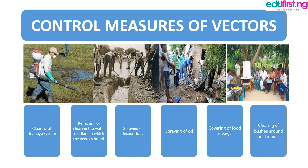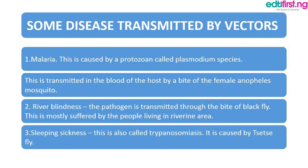Additional control measures include always covering our food. We should also clear bushes around our homes — when there are bushes, mosquitoes and other vectors have places to shelter, but when we clear bushes around our houses we have no issues with that.